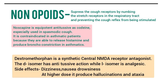Non-opioid antitussives suppress the cough receptors by numbing the stretch receptors in the respiratory tract, thereby preventing the cough reflex from being stimulated. Important drugs include noscapine and dextromethorphan. Noscapine is equipotent as an antitussive compared to codeine. Noscapine is especially used in spasmodic cough, but it is contraindicated in asthmatic patients as it can release histamines and produce bronchoconstriction.